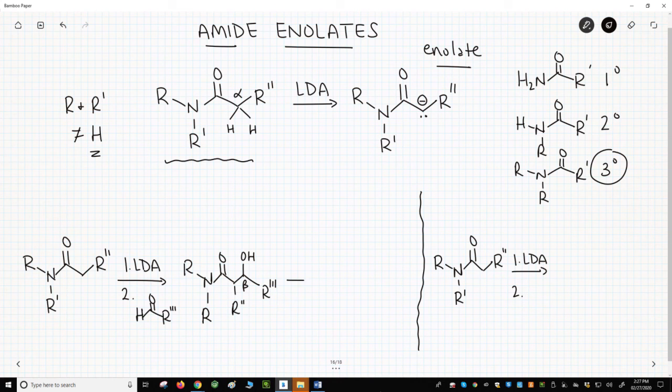If we treat this with a base, and that could be anything, sodium ethoxide, that sort of thing, we can get an alpha-beta unsaturated amide.